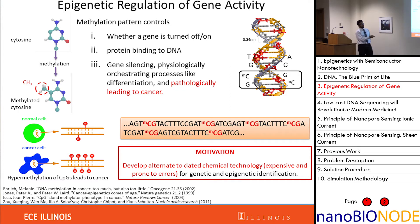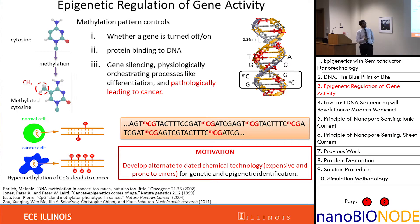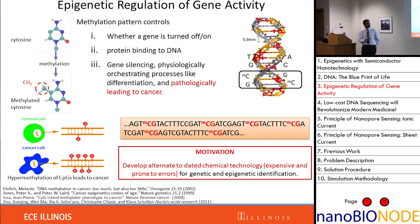DNA has a fixed directionality — you always have C followed by G from the 5' to 3' direction. These methylations control whether a gene is turned on or off, how a protein binds to the DNA, and they orchestrate processes like cell differentiation. If wrongly encoded, they can pathologically lead to diseases like cancer.